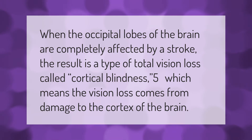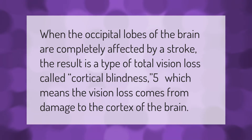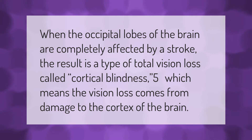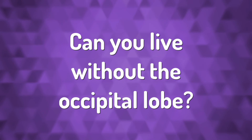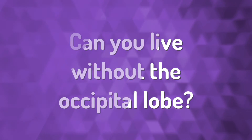When the occipital lobes of the brain are completely affected by a stroke, the result is a type of total vision loss called cortical blindness, which means the vision loss comes from damage to the cortex of the brain.